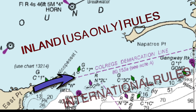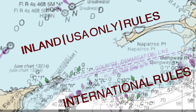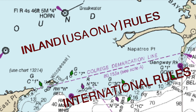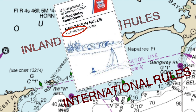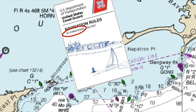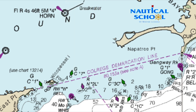The COLREGS demarcation line pertains to the 38 collision avoidance rules used between vessels. The proper name for these are navigation rules or collision avoidance regulations, abbreviated as the COLREGS. These 38 rules are used by vessels on the high seas and open oceans. There are also another set of 38 rules called the inland navigation rules to be used in inland areas of the United States. The COLREGS demarcation line denotes which of the two sets of rules the captain is to follow depending on which side of the line they are on.